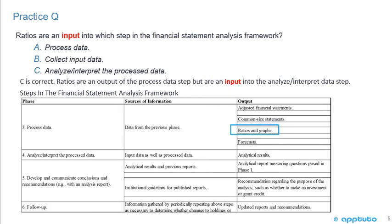The correct answer is C. Ratios are an input into step four — analyze and interpret the processed data. We can see that ratios and graphs are an output of the process data step, not an input. This is a very typical CFA question where you have to understand the different steps in the framework and the outputs and inputs of each step. You have to read it very carefully — the key word is 'input into which step.' When you see ratios, many people might answer A right away thinking 'process data,' but ratios are an output of that step and an input to the analyze and interpret step.